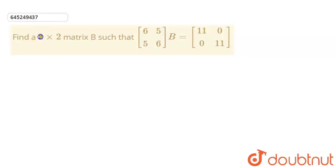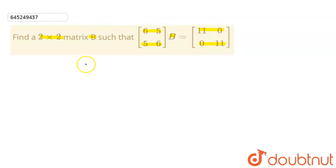The question is: find a 2 by 2 matrix B such that the matrix 6 5 5 6 multiplied with matrix B is equal to 11 0 0 11. We have to construct a matrix B of order 2 by 2.